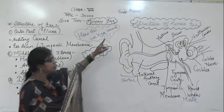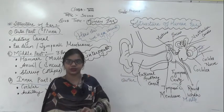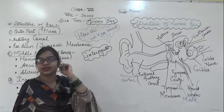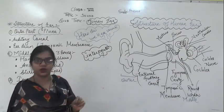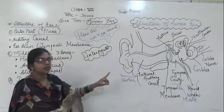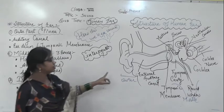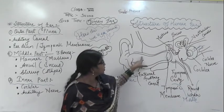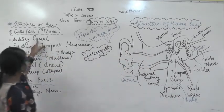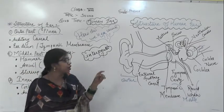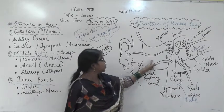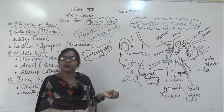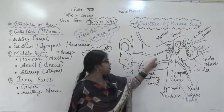The structure of the ear is divided into three parts. The first part is the outer part of the ear — this is the part which we are able to see. The outer part is also known as the pinna. From this outer part there is a tube-like structure, which is known as the auditory canal. If you put your finger inside your ear you will feel this tube-like structure.